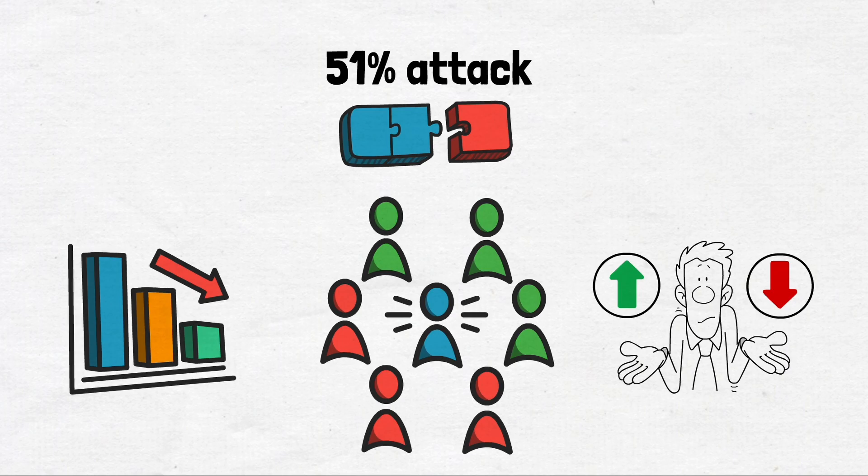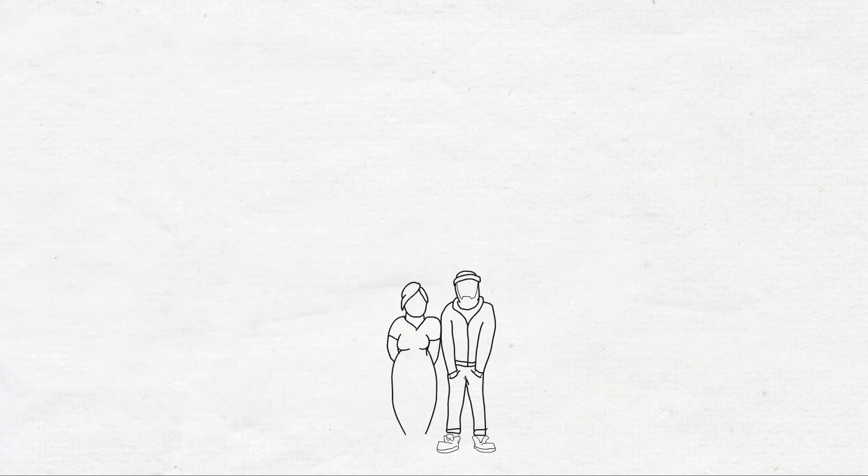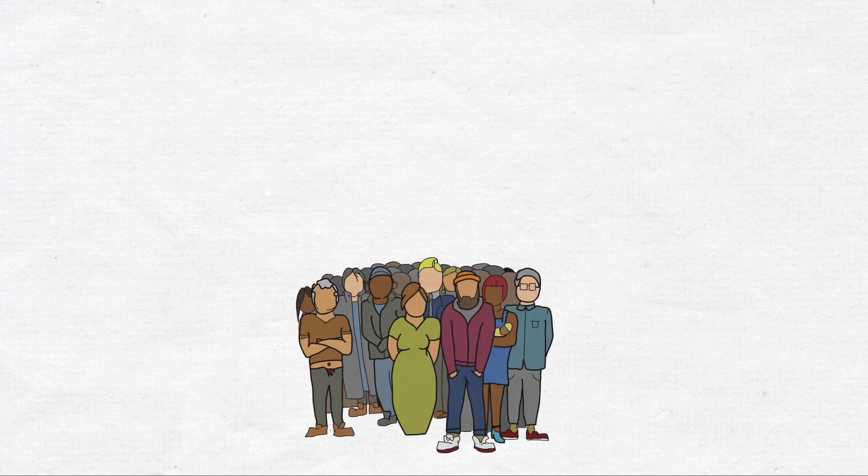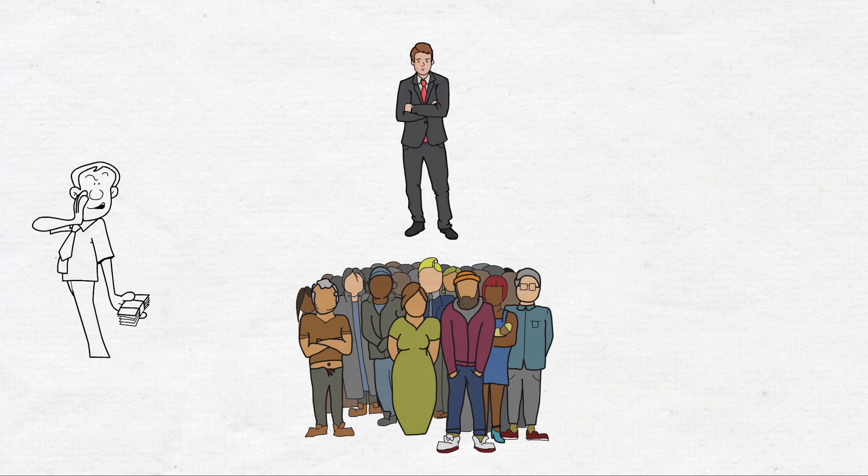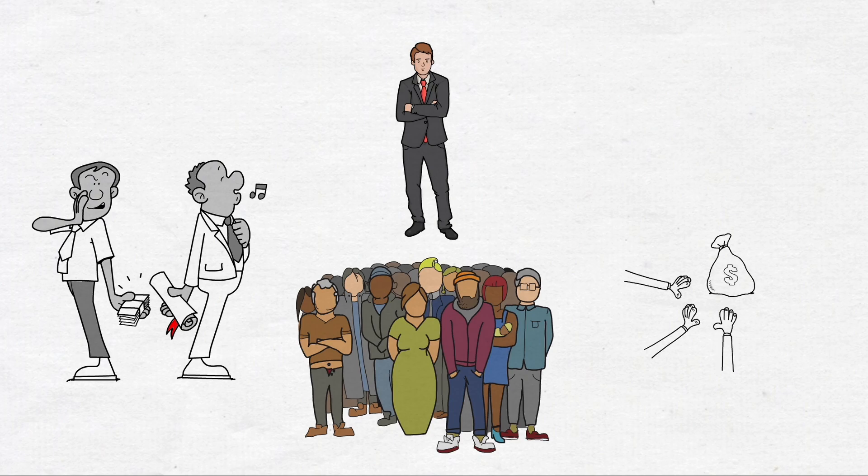This is called a 51% attack. If 51% of the blockchain is controlled by a person or a group of people, they can undermine the entire blockchain for all the users and manipulate it for their benefit. They can double spend the coins, steal funds, prevent other transactions and restrict other users to make changes.